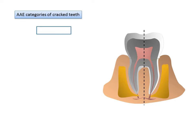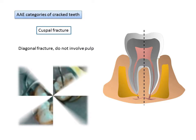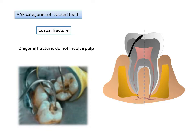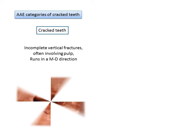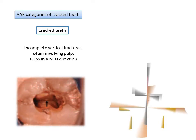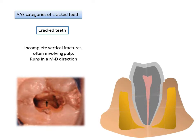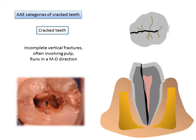The second category is cuspal fracture — usually a diagonal fracture that does not directly involve the pulp. In the image, the cuspal part is displaced toward the lingual side. The third category is cracked teeth, which are incomplete vertical fractures that often involve the pulp. The crack typically runs in a mesial-to-distal direction, visible both clinically and in a diagrammatic representation of the occlusal surface.